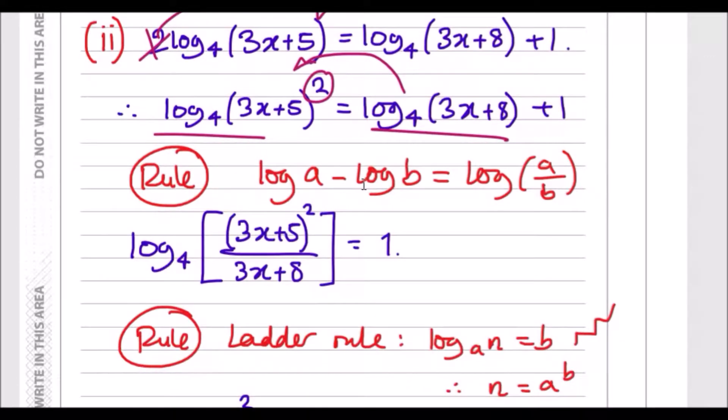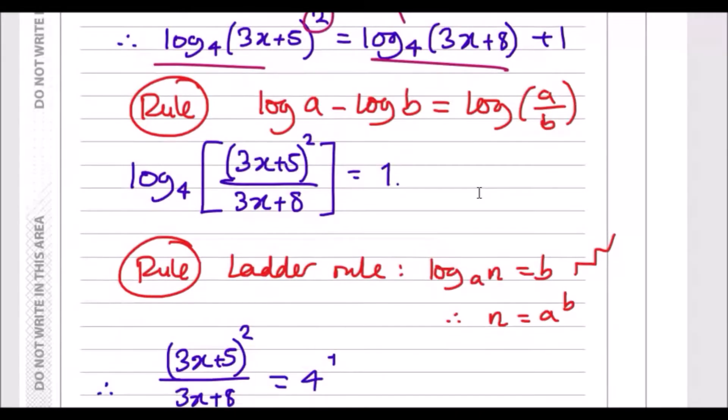Using the rule when you're subtracting logs, log a minus log b, you always get log(a/b). So essentially you're going to get (3x+5)² over (3x+8). This part here is essentially a over b.